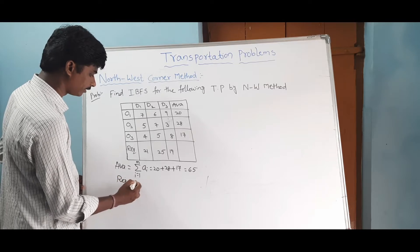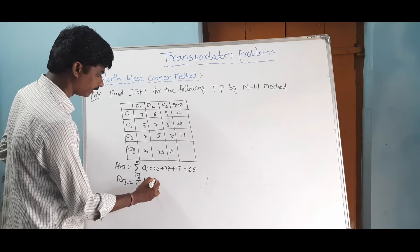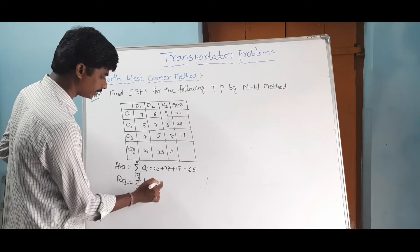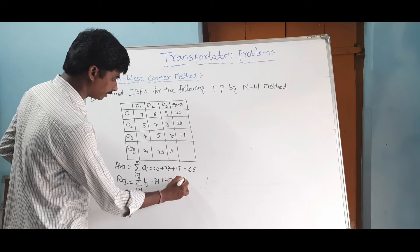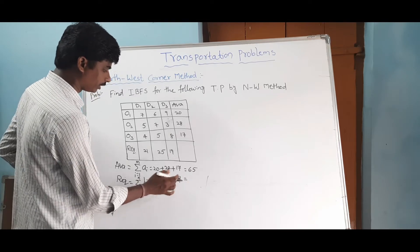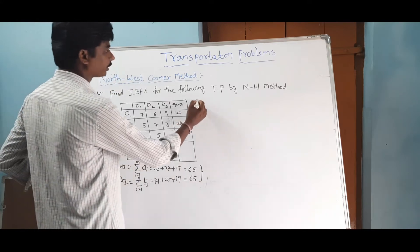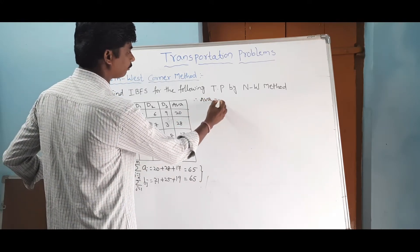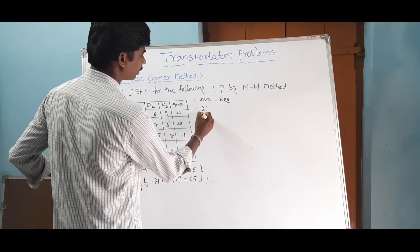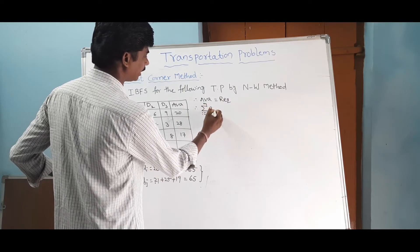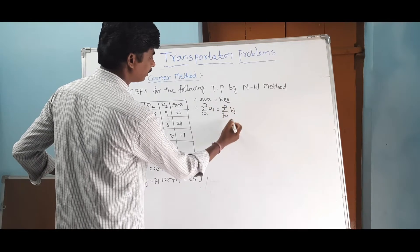Next, requirements: summation j=1 to n of bj equals 21 plus 25 plus 19. That equals 65. Both are equal, so therefore availability equals requirement — meaning summation ai equals summation bj. Therefore, the given transportation problem is balanced.